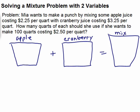Just be consistent — if you do a problem with cents, everything has to be done in cents; with dollars, keep it in dollars. The apple juice costs 225 cents per quart, the cranberry juice is 325, and we want the mixture to be 250. At the bottom, this is representing the unit cost — how much it is for one quart.